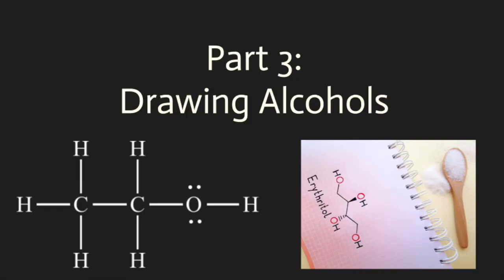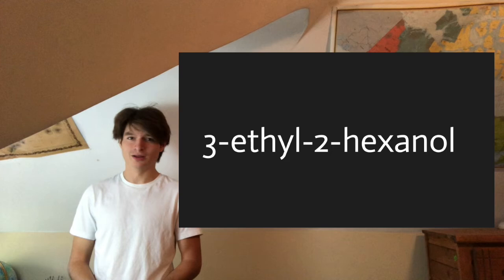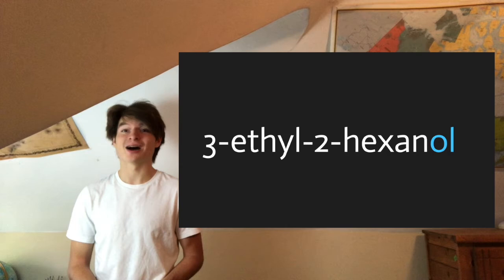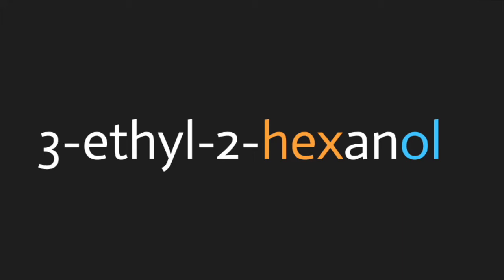So now let's try this process in reverse. If we're given the name of an alcohol, let's try to draw it. Let's consider 3-ethyl-2-hexanol. We can see the -OL ending, characteristic of an alcohol, so we know there's going to be a hydroxyl group somewhere in the compound. We can also see the hex root, indicating a 6-carbon parent chain. So let's go ahead and start off by drawing that in.